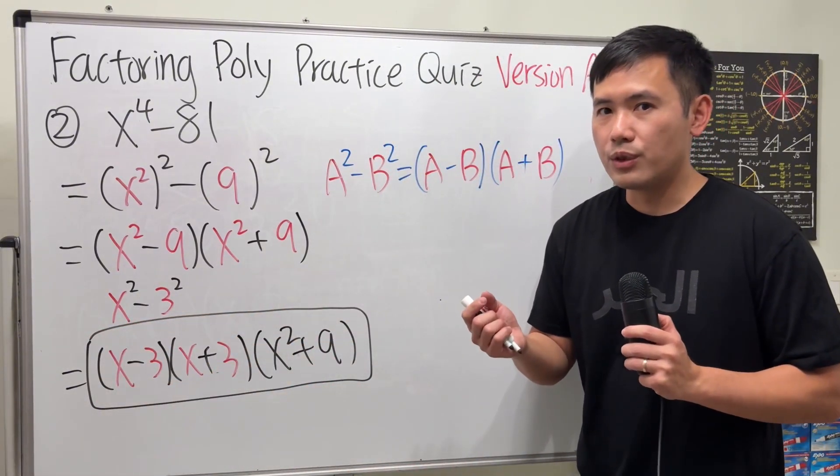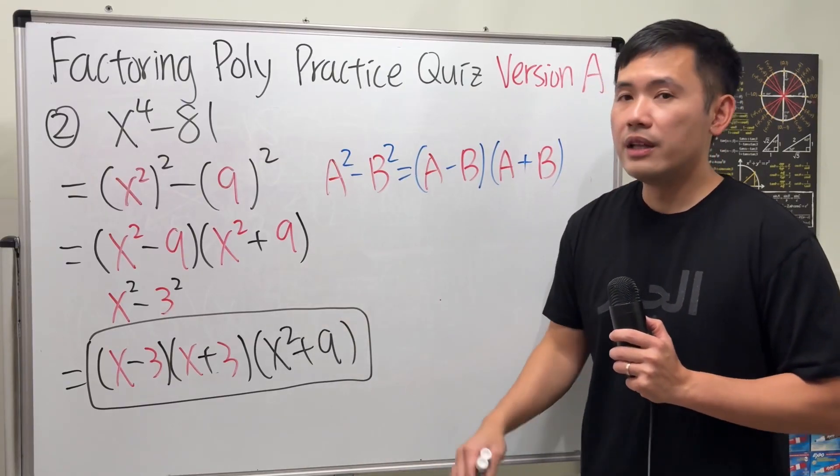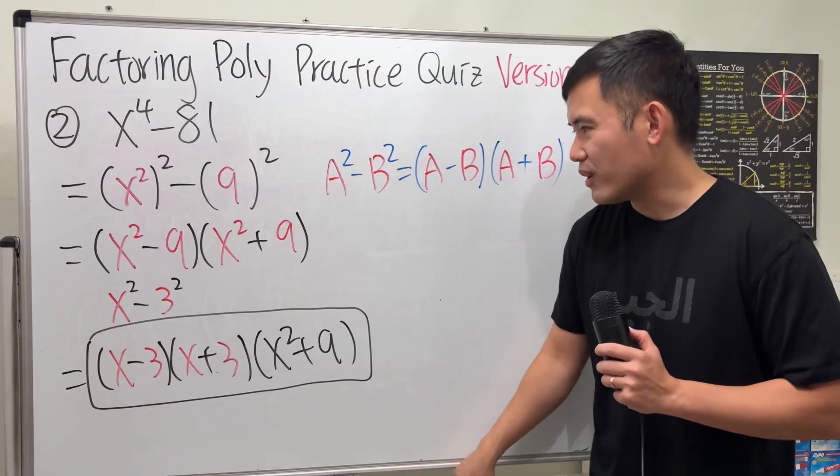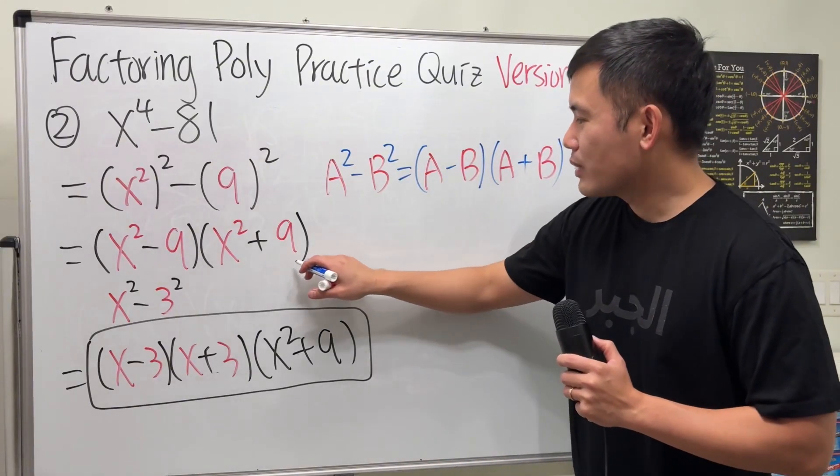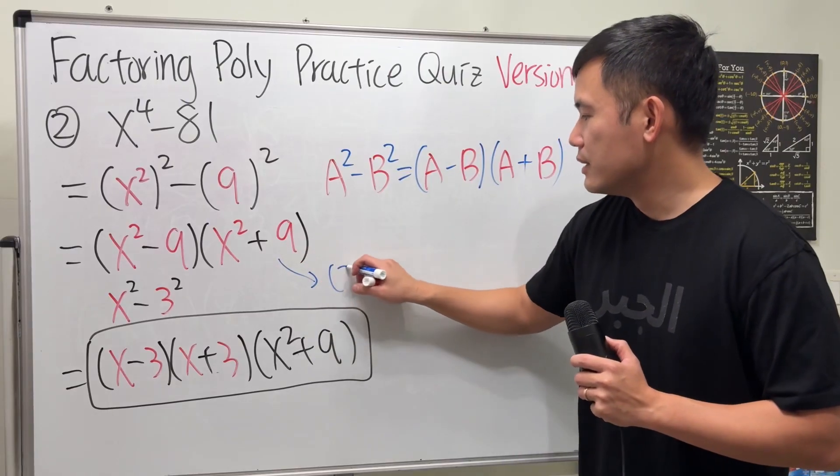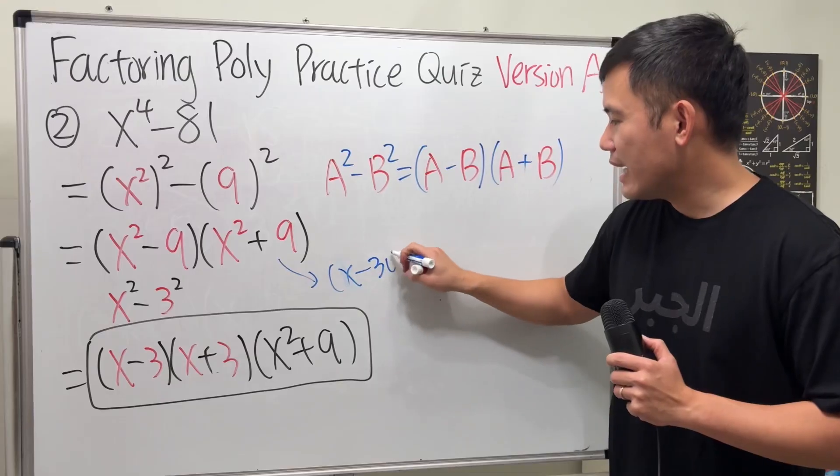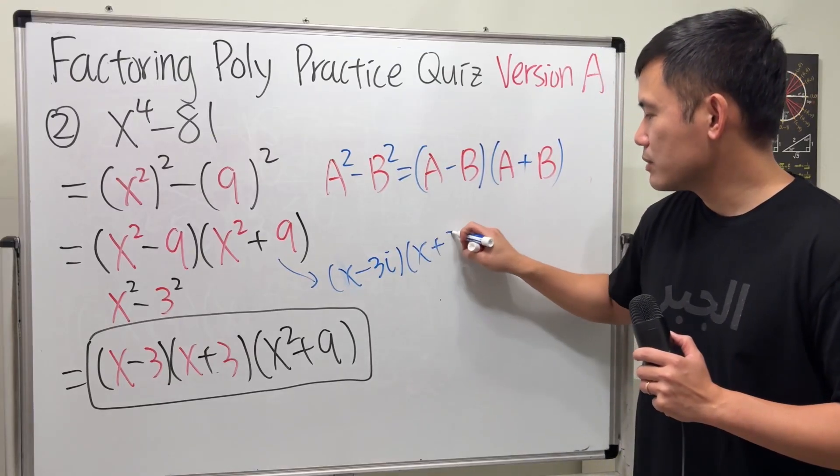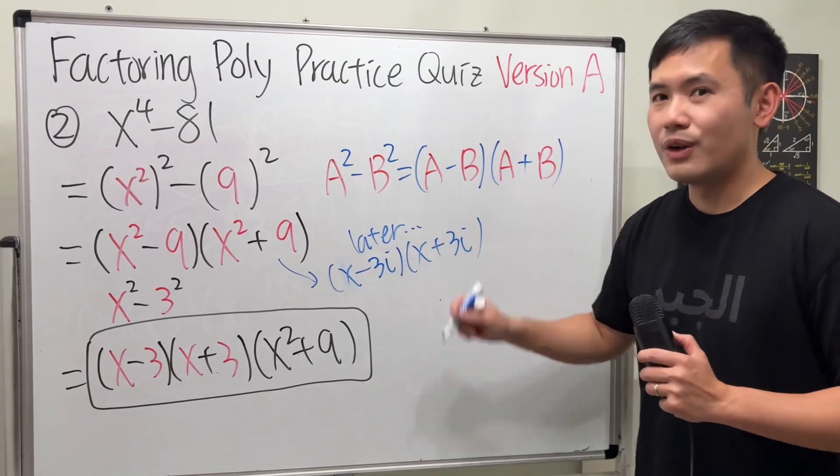Sometimes you will have to pay attention to the direction. If you have to use imaginary number to factor it, then you will continue. But that will be for later on. So just in case if you would like to see, this right here can be factored as x minus 3i times x plus 3i, but that will be for later, so don't have to worry about this yet.